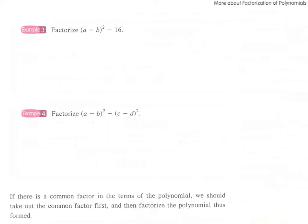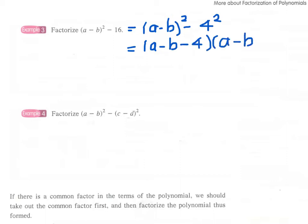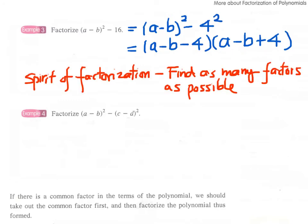Example 3: Factorize (a minus b) squared minus 16. We have a very obvious pattern of difference of two squares, though the first square is a bit more complicated. We write it as (a minus b) squared minus 4 squared, giving us (a minus b minus 4)(a minus b plus 4). We also have to check that there are no further factors inside these brackets. Remember, the spirit of factorization is to find as many factors as possible.